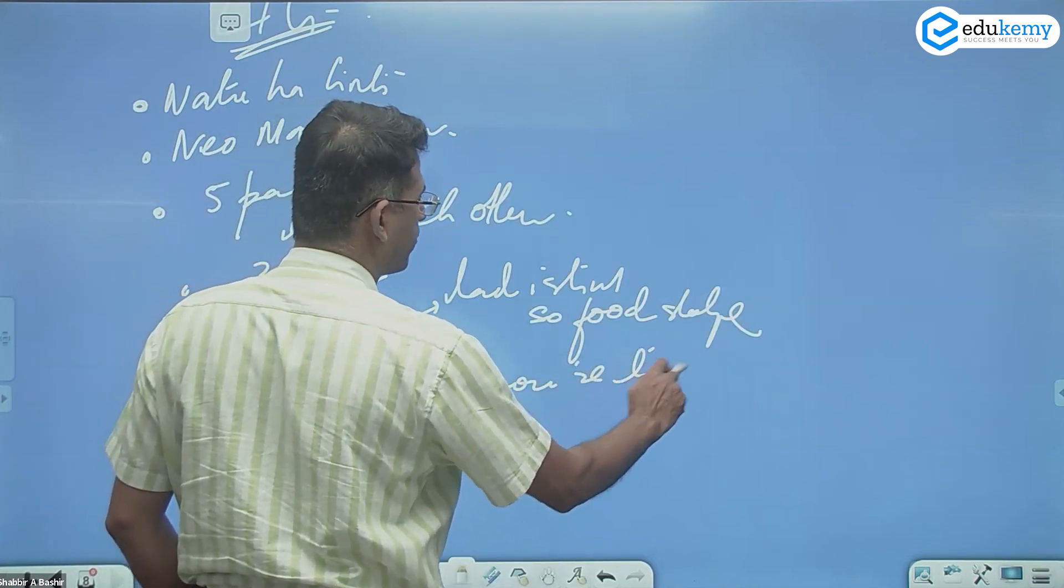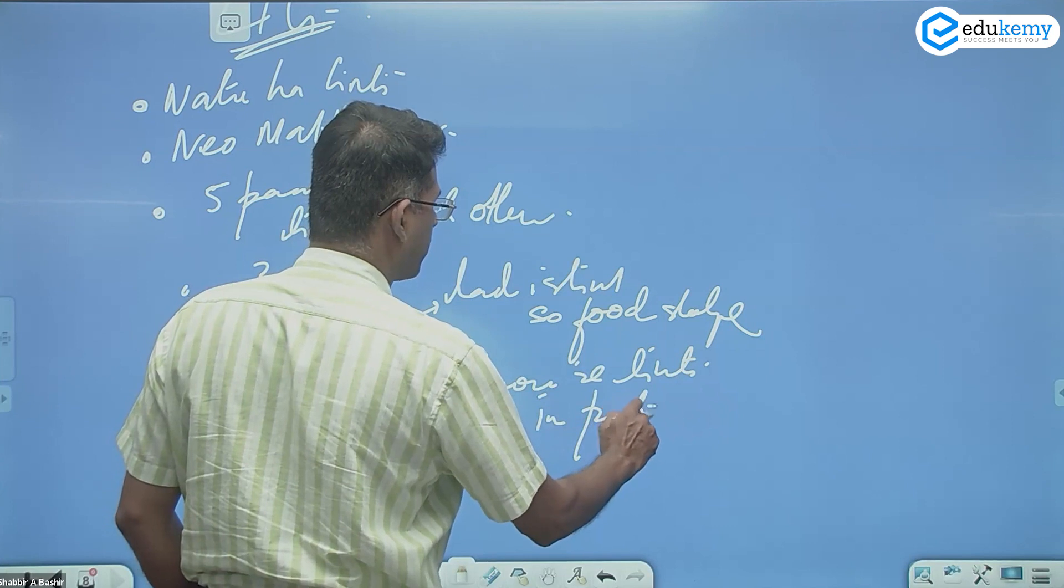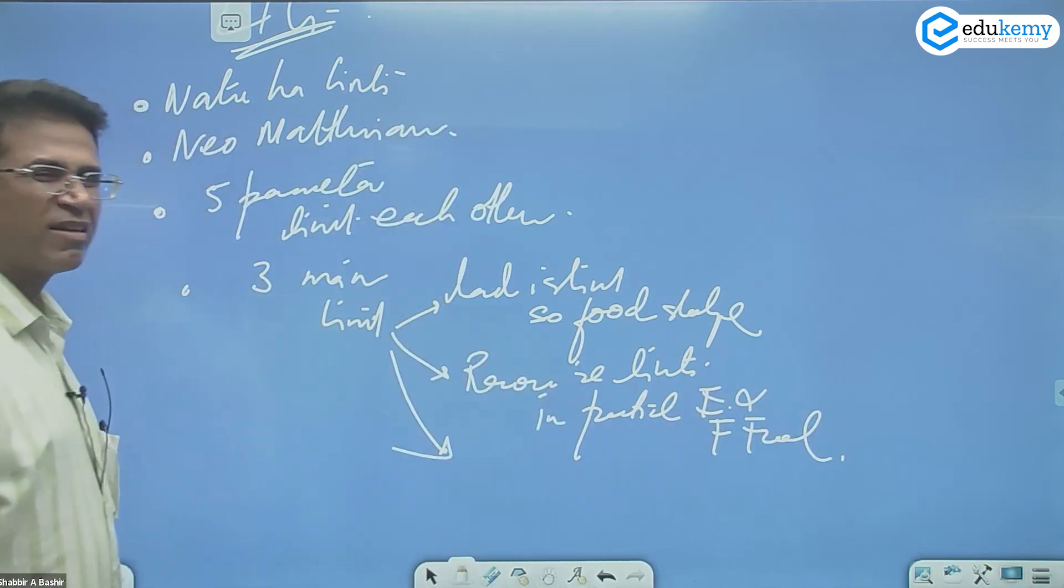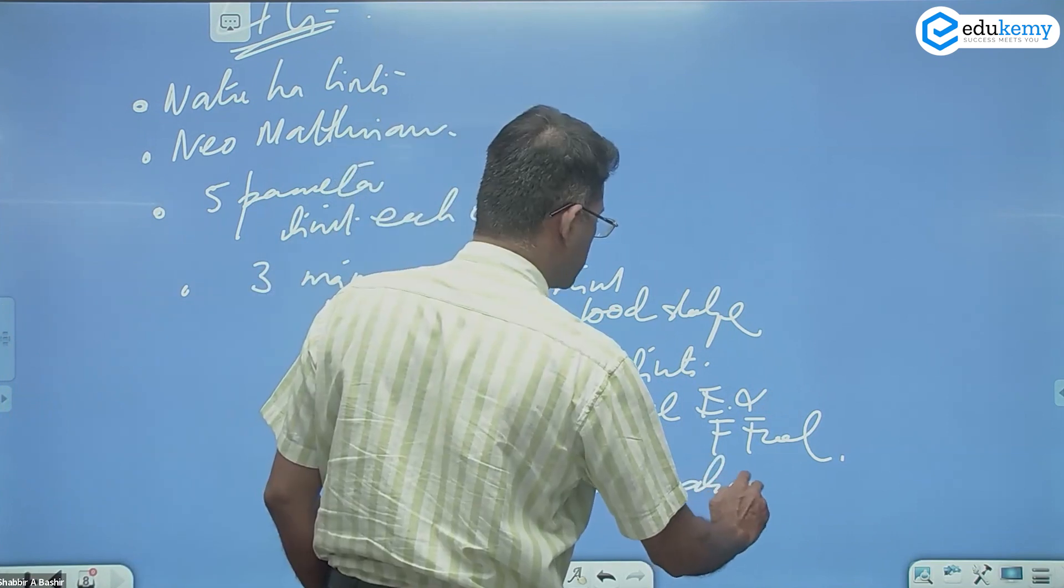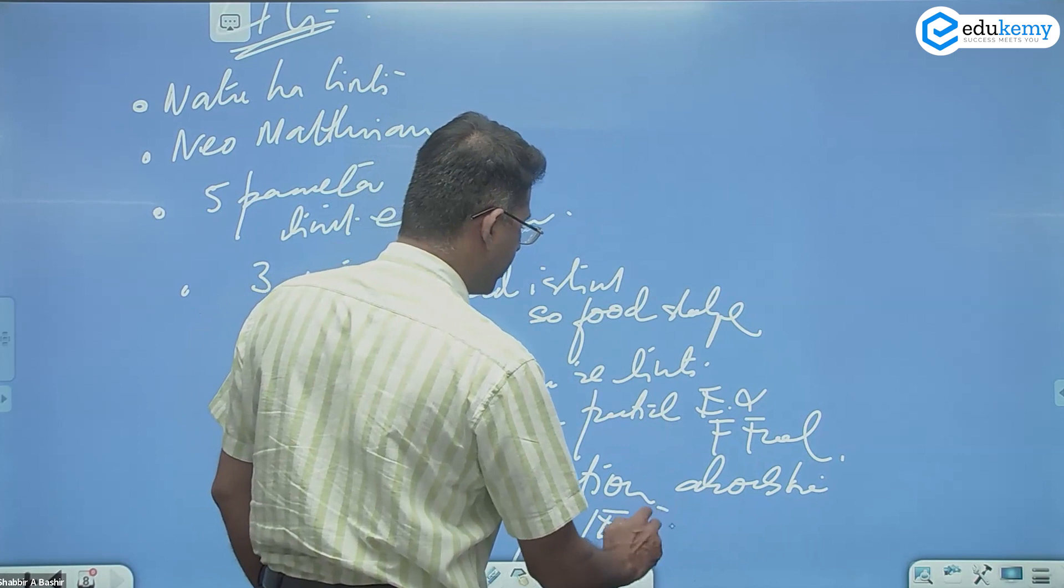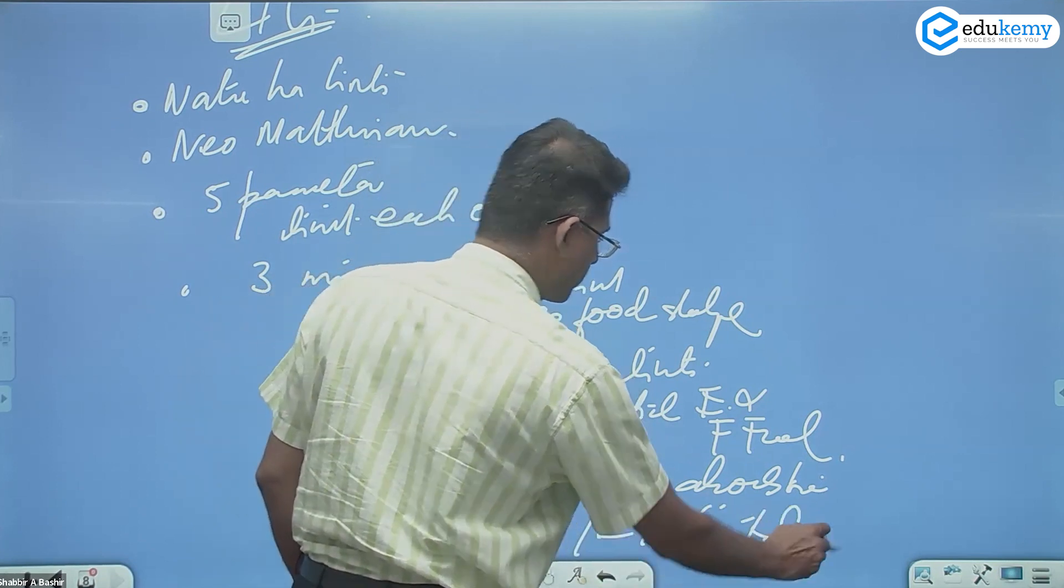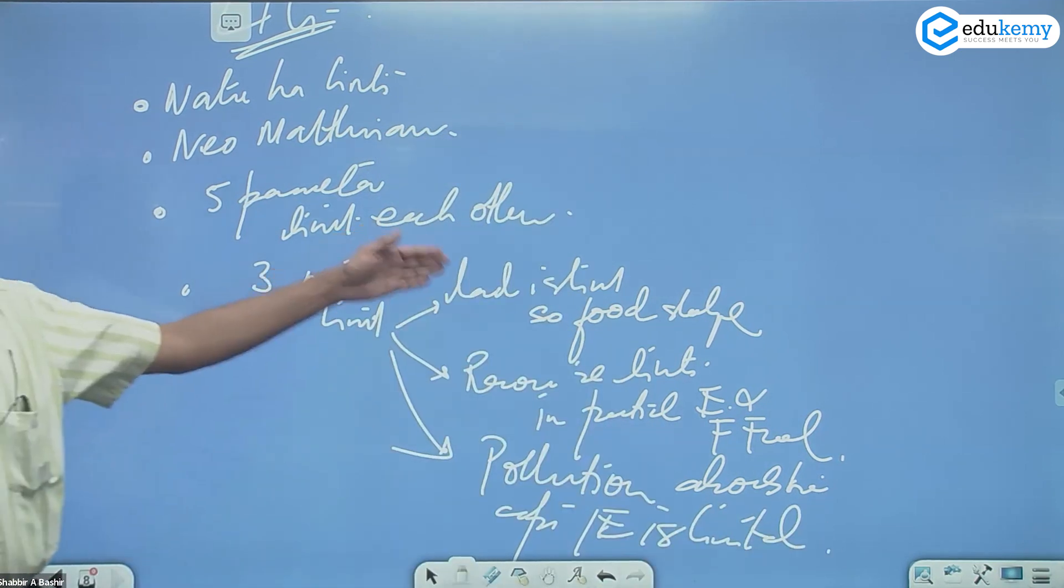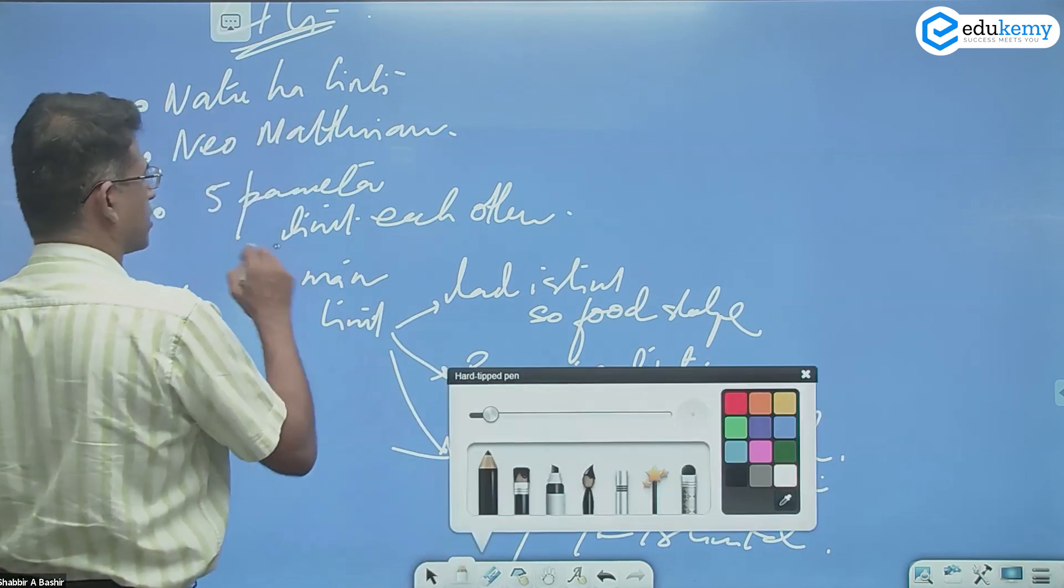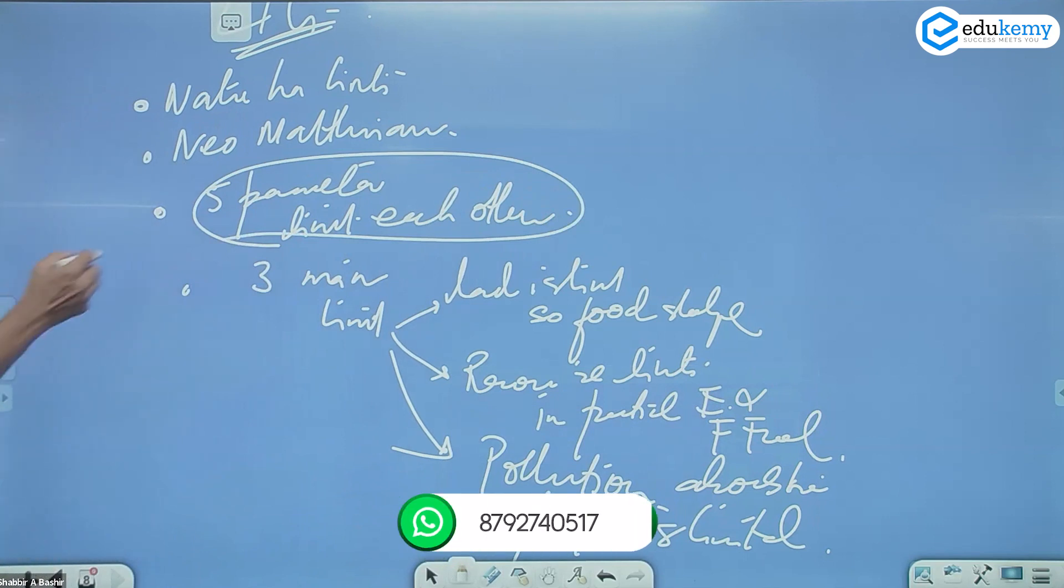Second limit is resources are limited, in particular energy and fossil fuel. The third limit is pollution absorption capacity of earth is limited. So all of these is carrying capacity.